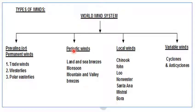Periodic winds are winds which blow in a particular direction for a particular period, and after that they reverse their direction. They are known as periodic winds or seasonal winds because they blow in a particular season.